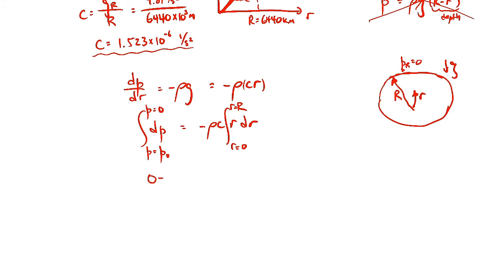So then we'll get, we'll integrate both sides. We'll get zero minus p naught is equal to minus rho C. Both of those are constants. Times one half capital R squared. So p naught will be one half rho C capital R squared.